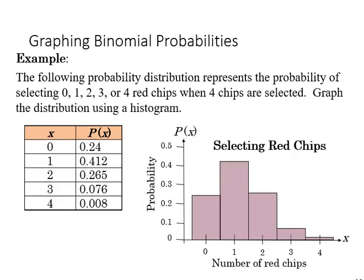We can also graph this binomial probability distribution, and so we see it here with this associated histogram for the number of red chips selected.